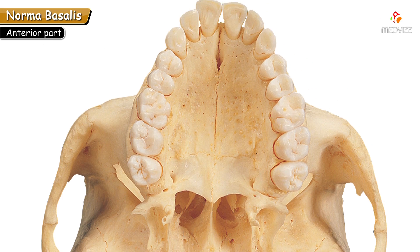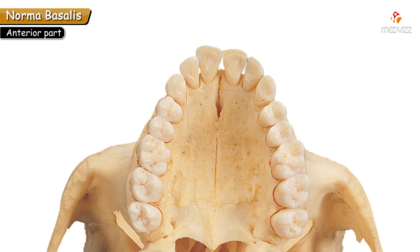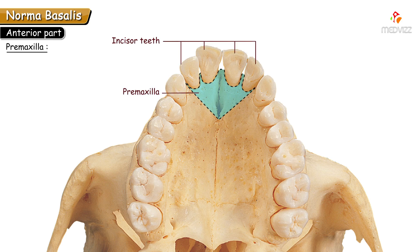One more point in the anterior part is the premaxilla. The premaxilla is a triangular piece of the maxilla holding the four incisor teeth. In other vertebrates it is present as a separate bone, but in humans it is a part of the maxilla. This concludes the anterior part of Norma Basalis.